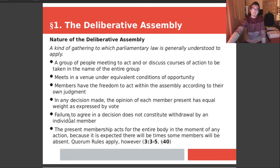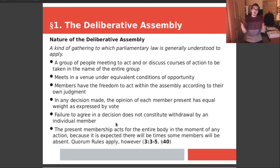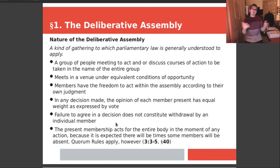If an individual member doesn't agree — say it's a four-to-one decision — that doesn't constitute withdrawal by the individual member. If you're on a government body and you vote no, it doesn't mean you just rage quit, flip the table, and leave. You're still there. It's not an automatic quit. You need a full resignation for that.